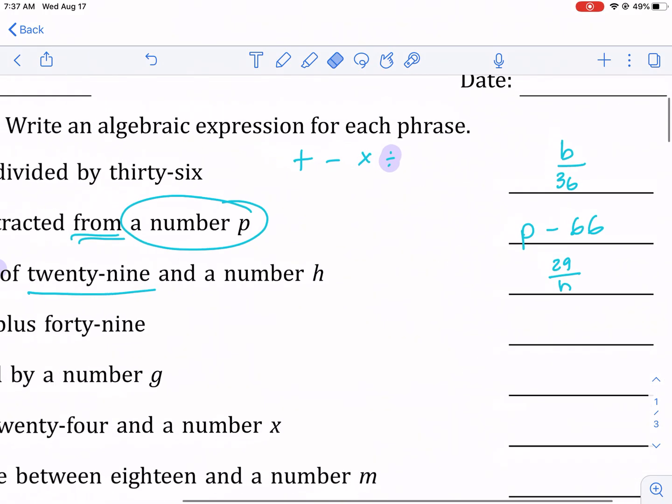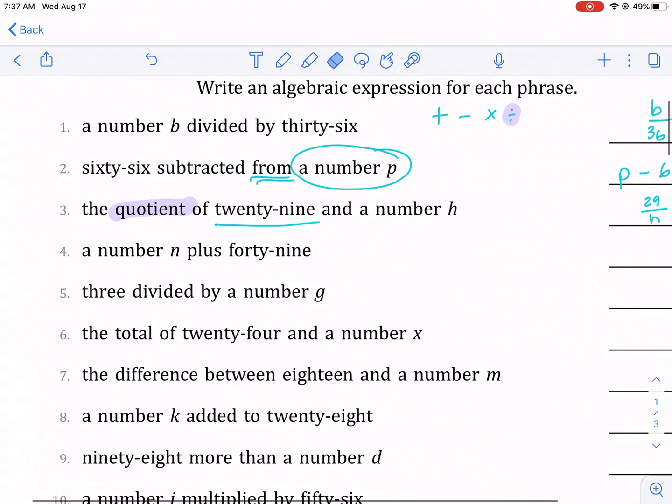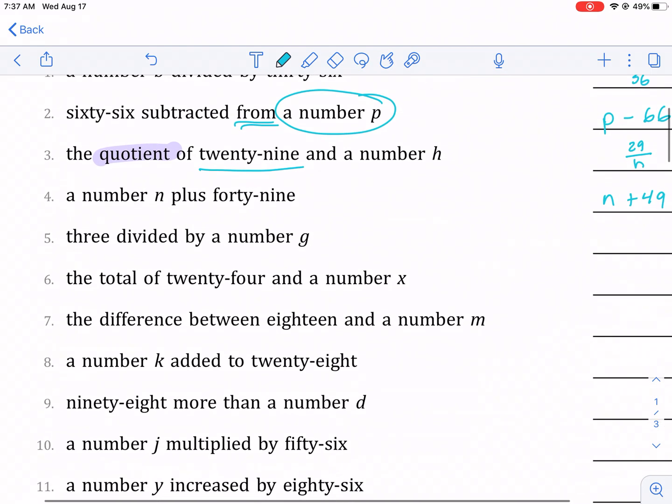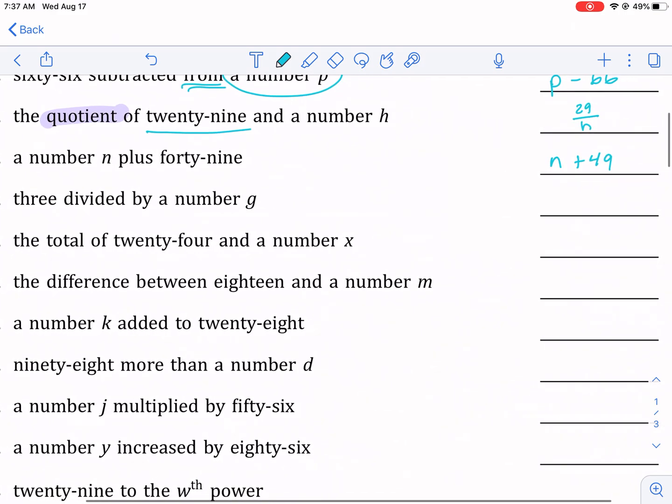All right, a number n plus forty-five—real simple here. We have just n plus 40—oh, 49, sorry—n plus 49. Three divided by a number g—3 divided by a number g, just real straightforward again.